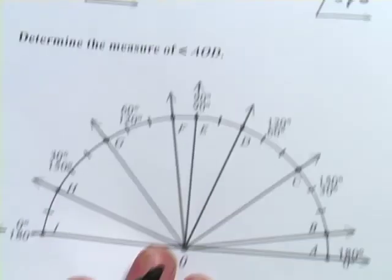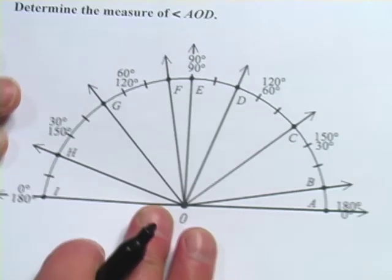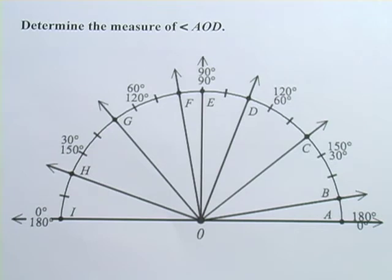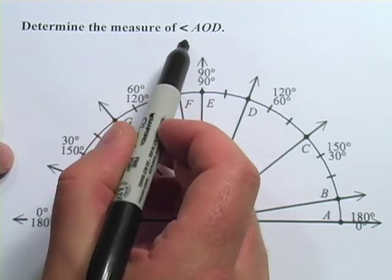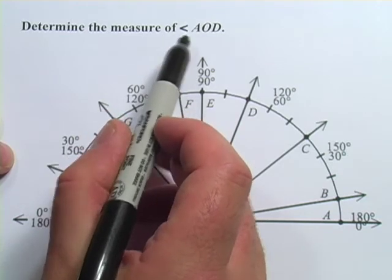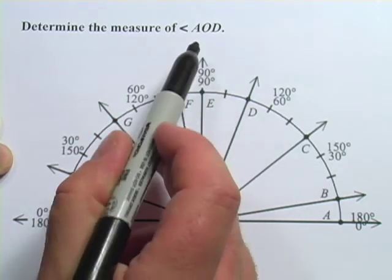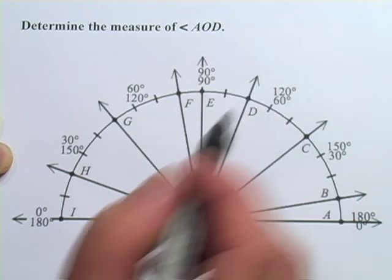A little funny using such a big protractor and such small angles. Let's try one more here, and then I want to show you how to use the protractor inside the web environment, because that can be a little tricky too. Determine the measure of angle AOD. So it's got a little angle sign here and then AOD.